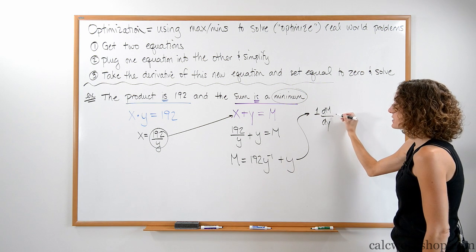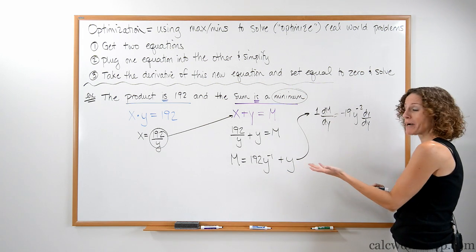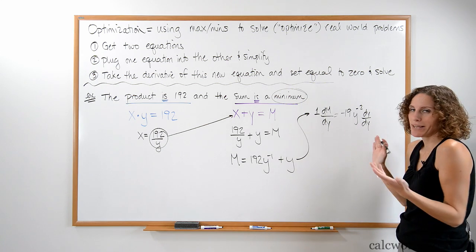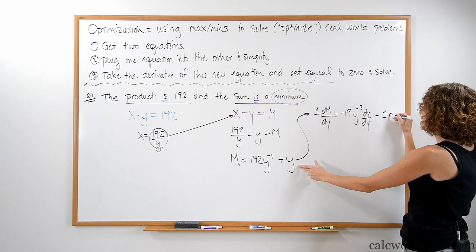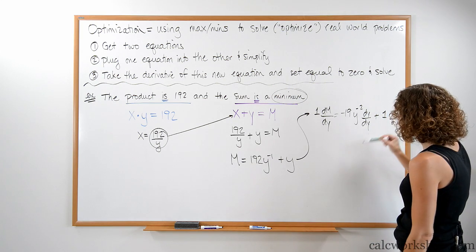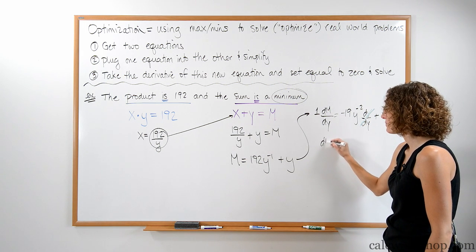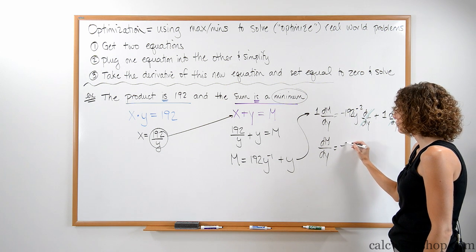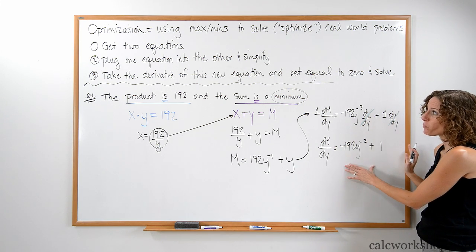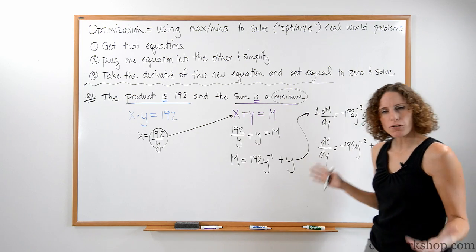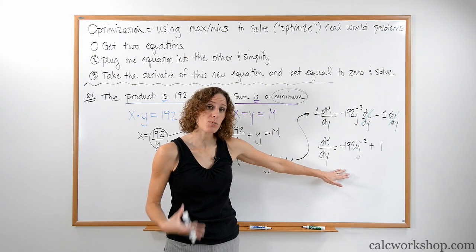Taking the derivative, we get dm/dy equals negative 192 y to the negative two plus 1. The derivative of y with respect to itself is 1 — we can write dy/dy but we tend to skip that and just write the result. So dm/dy equals negative 192 y to the negative two plus 1. Why do we take a derivative and set it equal to zero? Because we're trying to find a maximum or minimum.